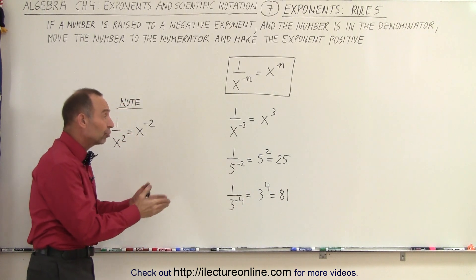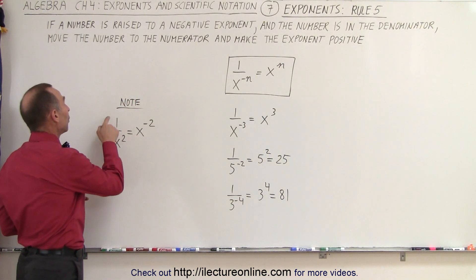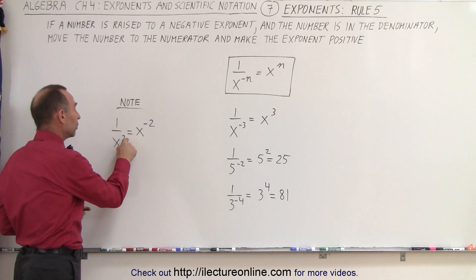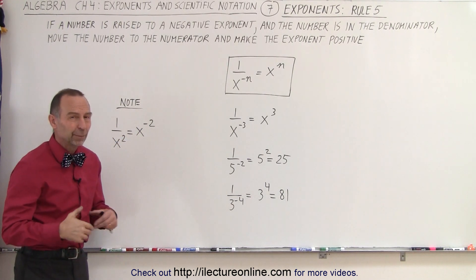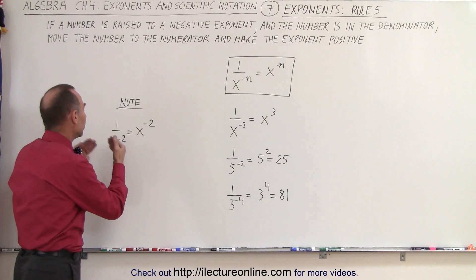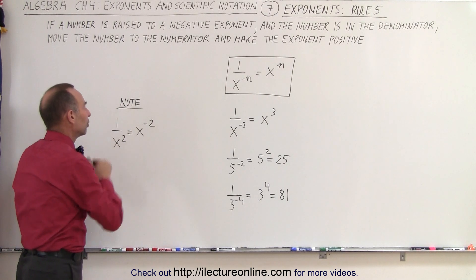Now, if that is true, then the following must be true as well. If we have 1 over x to the positive exponent, we can move that number to the numerator and turn the exponent negative. We simply change the sign of the exponent by moving the number to the top or moving the number to the bottom.